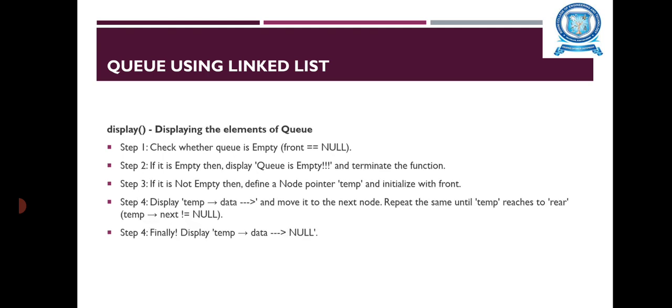The next operation is display, which is used to display the elements of the queue. Step one — check whether the queue is empty. If it is empty, display 'Queue is empty' and terminate the function. If it is not empty, define a node pointer temp and initialize it with front. Display temp->data and move to the next node. Repeat until temp reaches the rear, then finally display temp->data pointing to null.